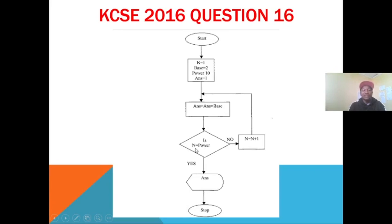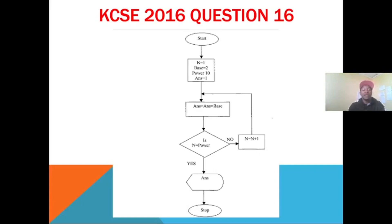If asked to interpret the flowchart, you write it like a contextual explanation: the program starts, N is initialized to 1, Base to 2, Power to 10, Ans to 1. Then Ans = Ans times Base is computed. We check if N equals Power — if true, print the answer and terminate; if false, increment N by 1 and repeat. You can also write this as pseudocode — English-like statements explaining the algorithm.